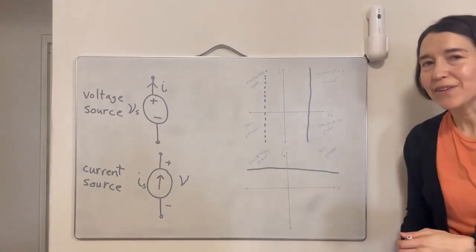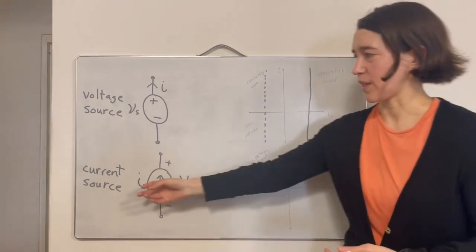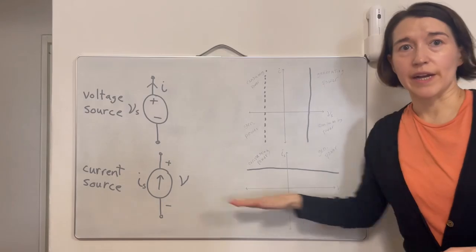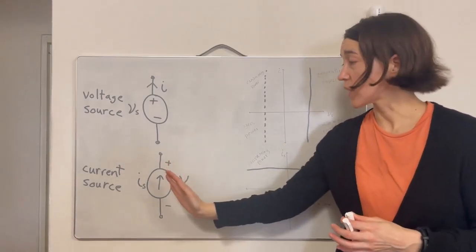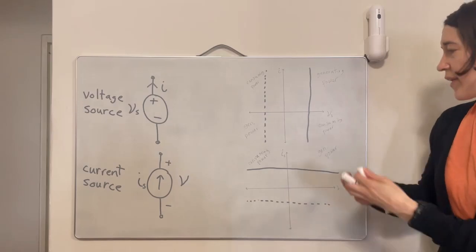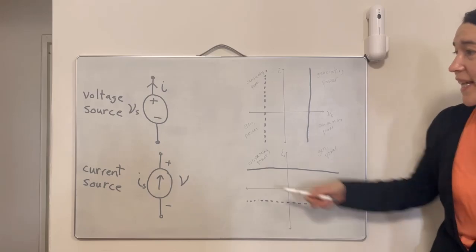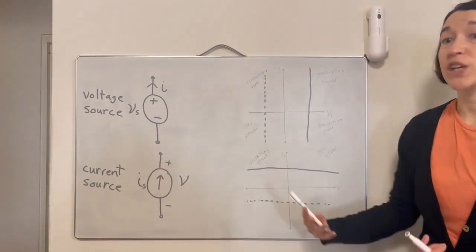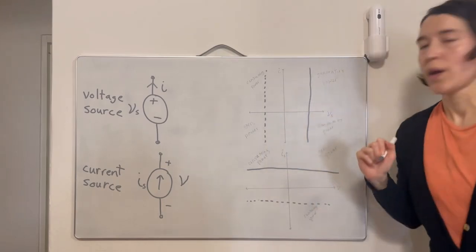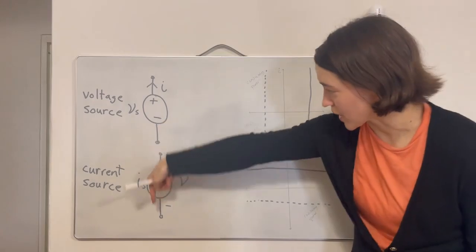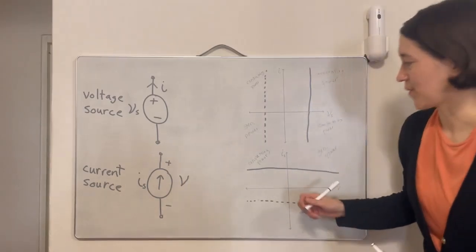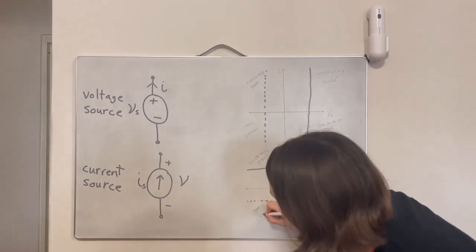For a negative current source, the current goes in the opposite direction — say negative three. On the IV curve, it's a horizontal line below zero, always generating that negative current at any positive or negative voltage. If it has a negative current with a positive voltage, it would be consuming power. But if the polarity is also flipped — negative current with negative voltage — it would actually be generating or supplying power.